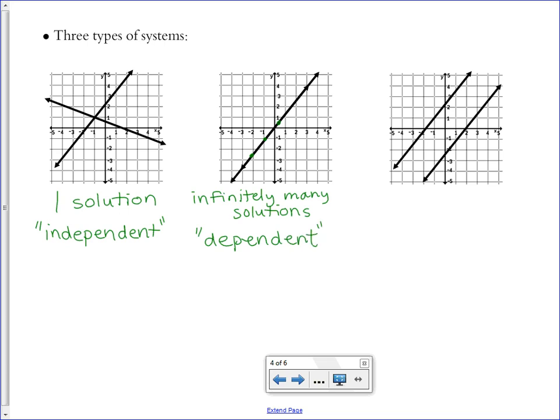And then the final system is a pair of parallel lines that never cross and never will cross, so they have no x, y points in common. This is a no-solution system, and we classify that as inconsistent.